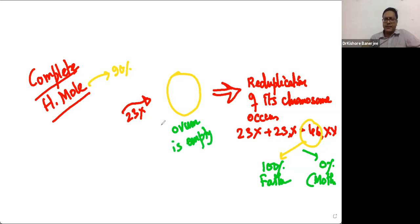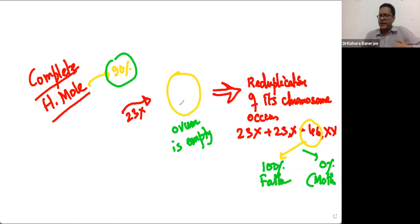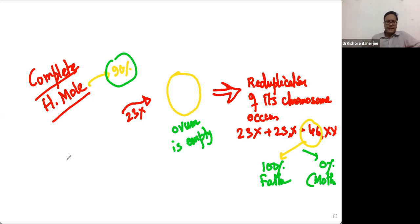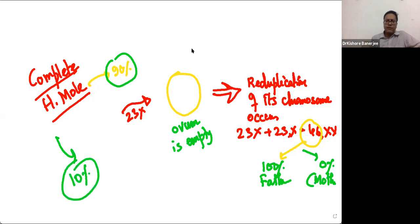So in 90% of cases, one sperm fertilizes an empty ovum and that sperm reduplicates its chromosomes — it was 23X, it becomes 46. In 10% of cases of complete mole, an empty ovum can be fertilized by two sperms, which is called diasperm.